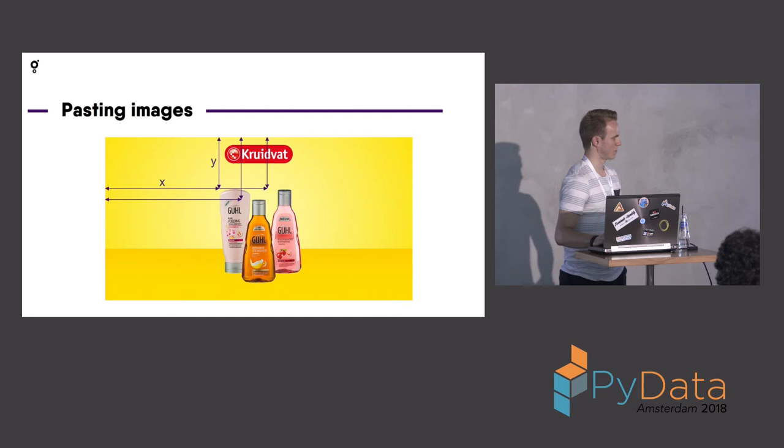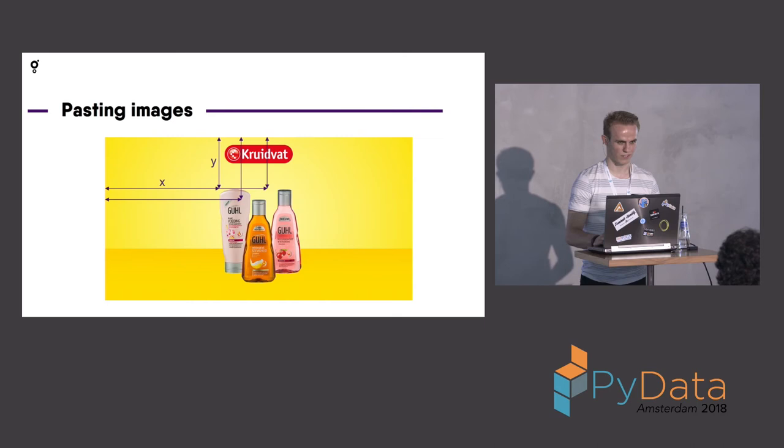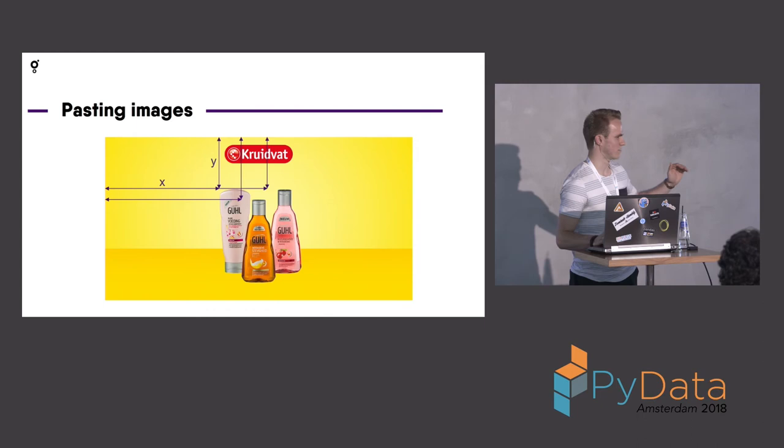Pasting the images is done by the top left corner. You see that three bottles are pasted on the canvas using this methodology. Also, the ones that are placed higher are pasted first, so that a higher item doesn't get pasted in front of the other one.